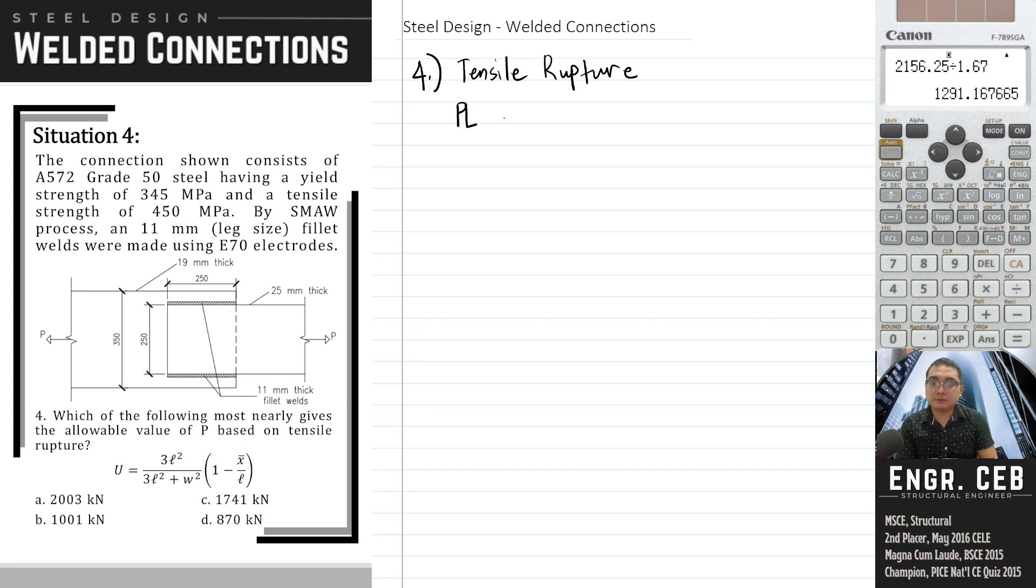Let's start with the 25 by 250 plate. We have Pn equals Fu times AE. AE is U times Ag. Let's compute the value of U. L is 250, W is 250, and X-bar is based on the thickness.